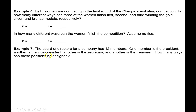Let's look at how to do this in Desmos with this next example. Eight women are competing in the final round of the Olympic ice skating competition, so our total N is eight. In how many different ways can three of the women finish first, second, and third — winning the gold, silver, and bronze medals respectively? We're choosing three of these eight. The reason order matters here is because it's a different result if different people finish first, second, and third. So because of that ordering, we're going to take a permutation of 8 objects, 3 at a time. This notation is how you show your work and what we'll put into Desmos.